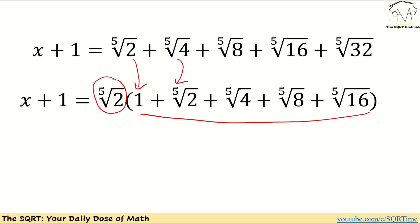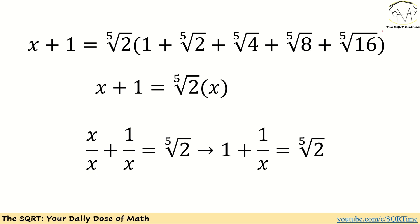From here I'm going to say that I already know what this expression is. We define that as x in the original problem, so I can say that x plus one is basically two to the power of one over five times x.